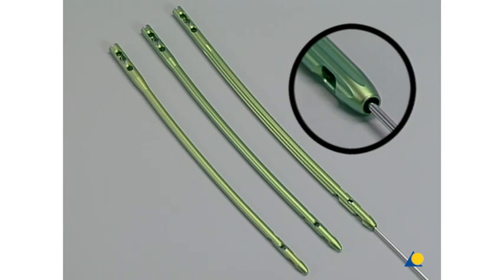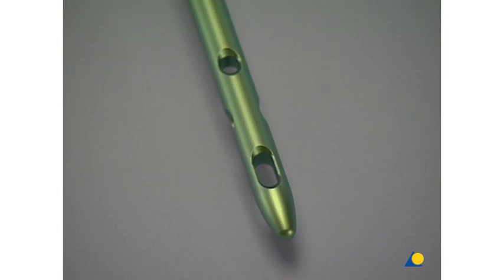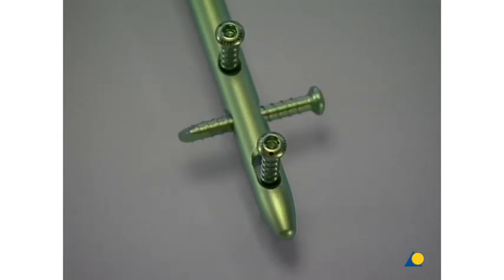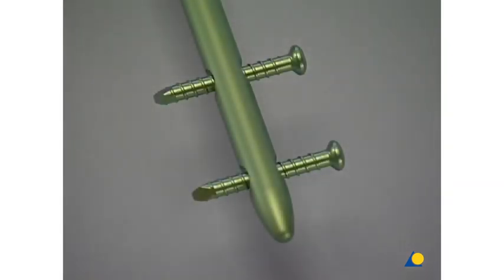Proximal locking is usually performed using 4.9 mm self-tapping bolts. The longer nails may be locked dynamically through an oval hole in the anteroposterior direction, and or statically through a hole in the AP direction, and or through a second static hole in the lateral medial direction. The shorter nails are locked proximally through static holes with two 4.9 mm bolts, placed in the lateral to medial direction.